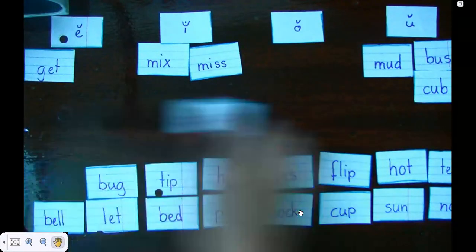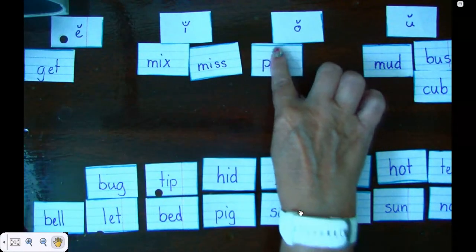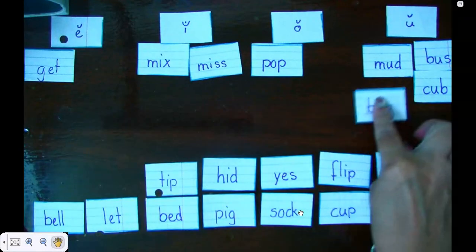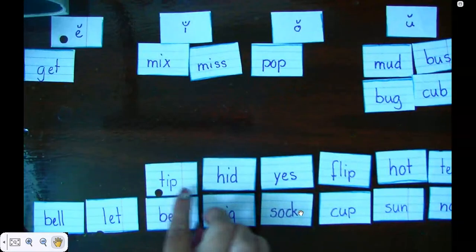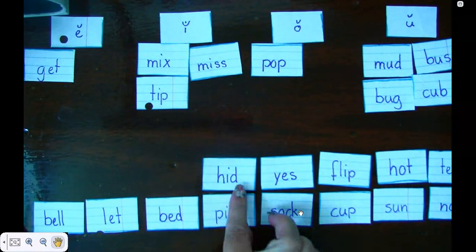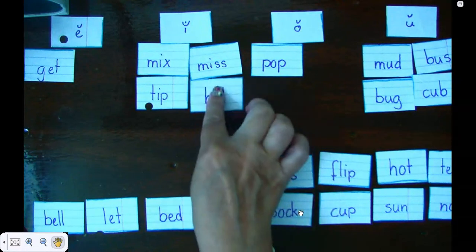Pop has an O, so it goes under my O column. Bug has a U, it goes under my U column. Tip has an I, so it goes in my I column. Hid also has an I, so it goes in my I column.